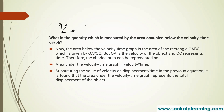For uniform motion we can show the distance-time graph as a straight line. For non-uniform motion, the graph is a curve. Next question: what can you say about the motion of an object whose distance-time graph is a straight line parallel to the time axis? It means that the body is at rest.